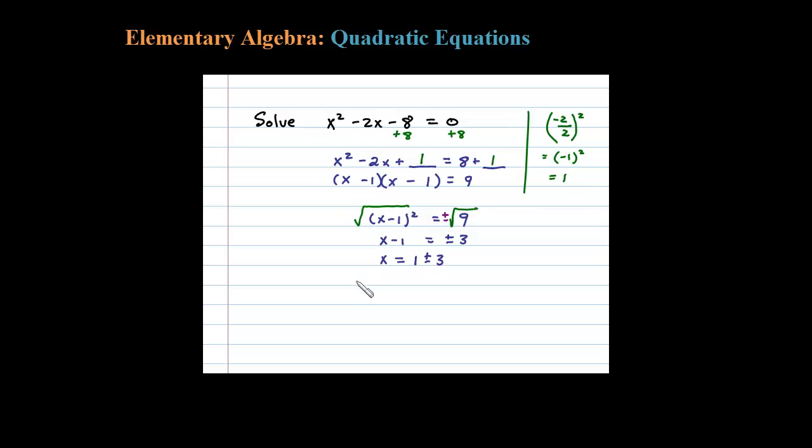When I add 1 to both sides I get X equals 1 plus or minus 3. So here we get two solutions: when I use minus, 1 minus 3 is negative 2, or when I use the plus, 1 plus 3 is 4.